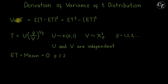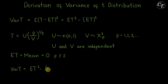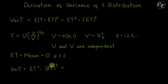So now let us derive the variance of t using this formula. Since the expectation of t equals 0 when p is greater than or equal to 2, and we don't have an expectation of t when that condition is not met, we can cancel it. So we have only the expectation of t squared, and we need the condition p is greater than or equal to 2.